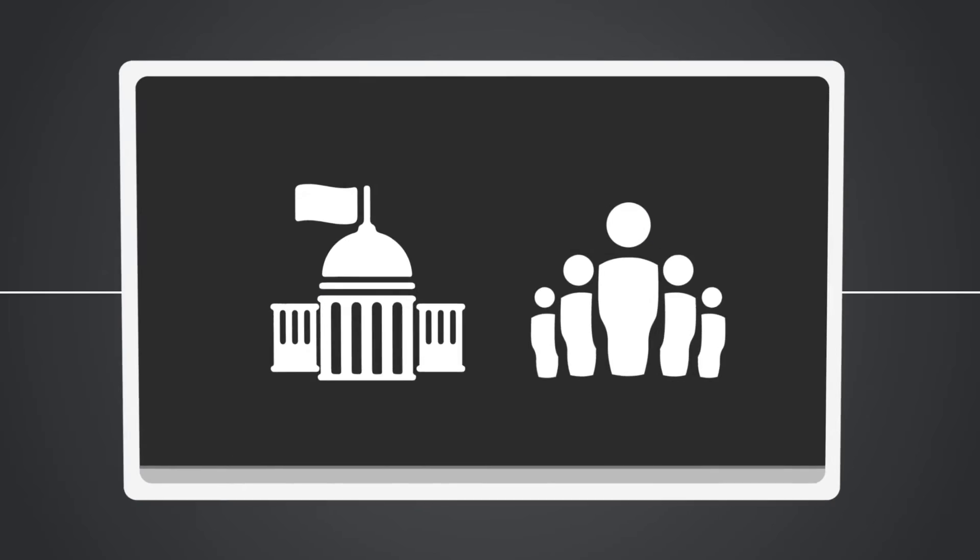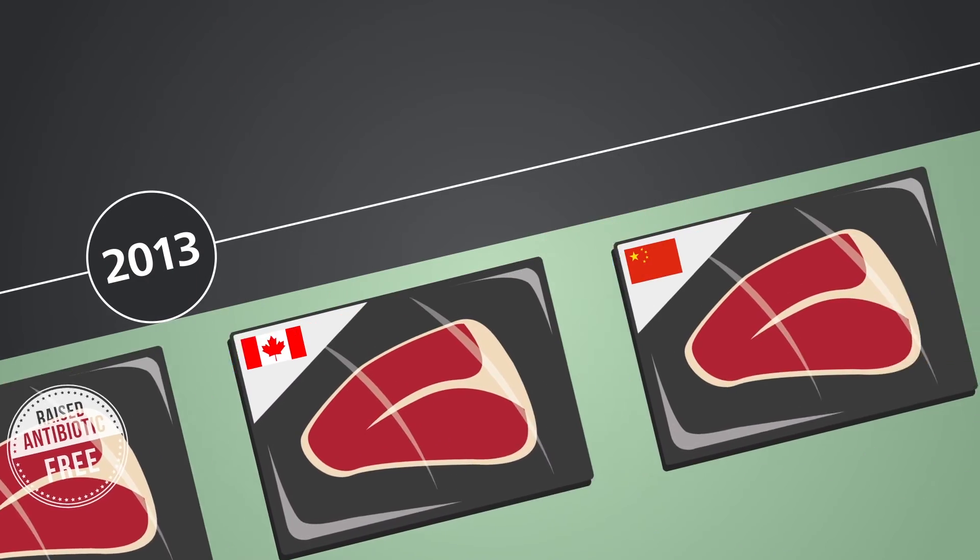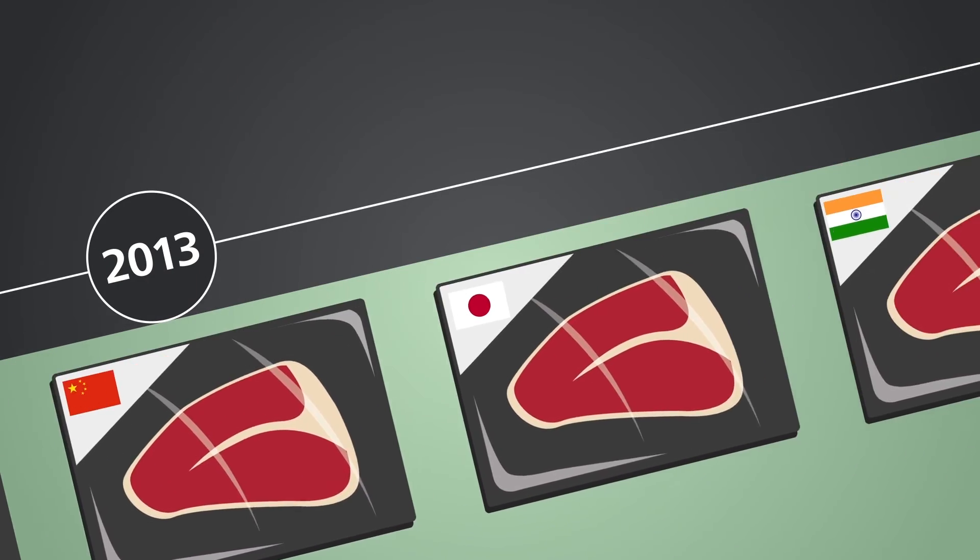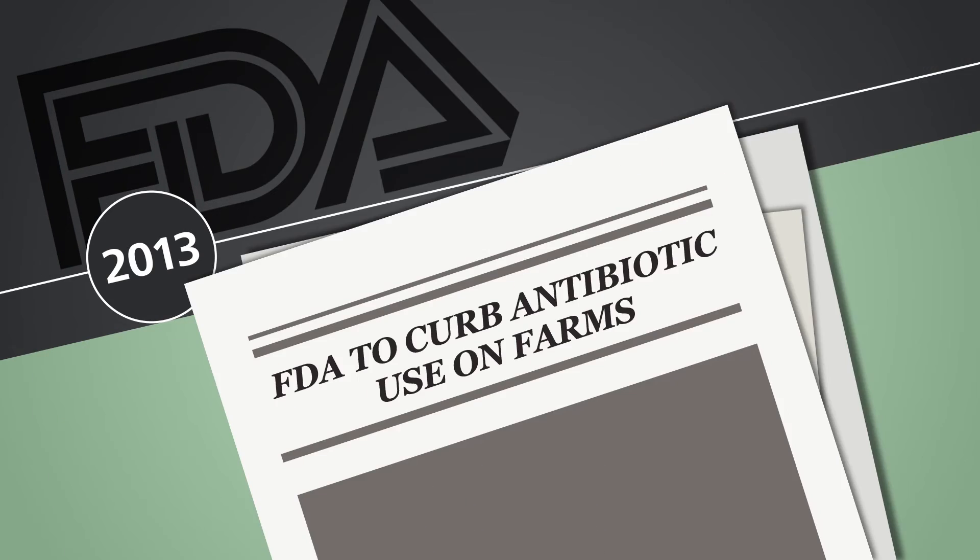So consumers and governments take action. The European Union bans the use of antibiotics to fatten livestock. By 2013, regulations are in place in 46 countries around the world. And in the United States, the FDA announces a policy for removing indiscriminate antibiotic use by 2017.